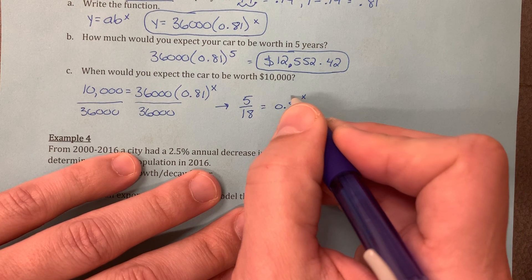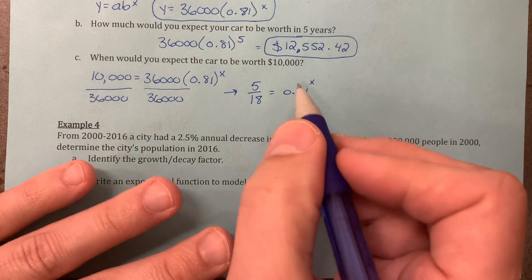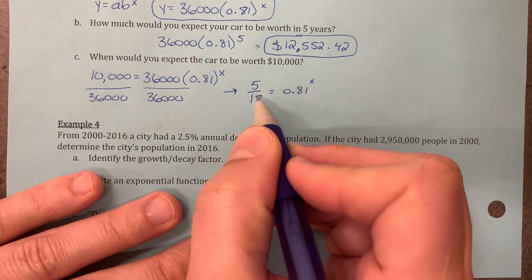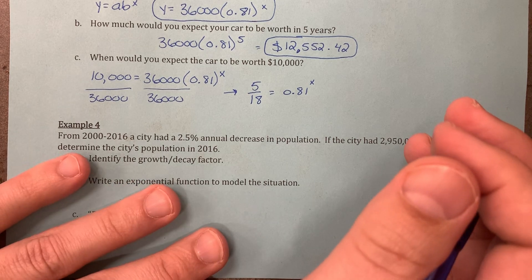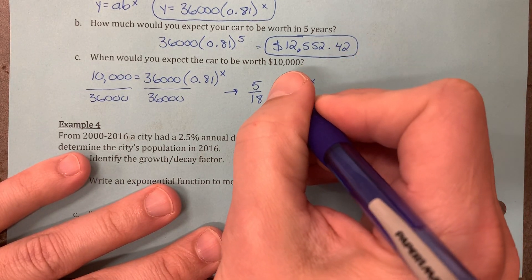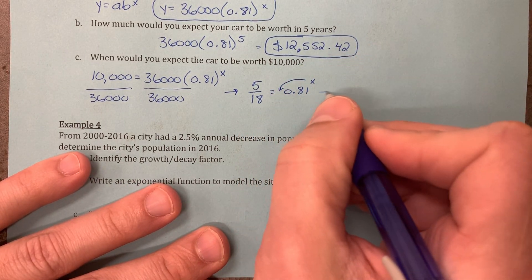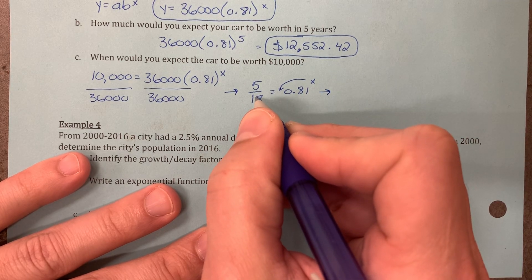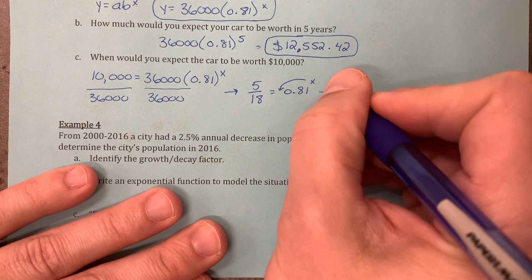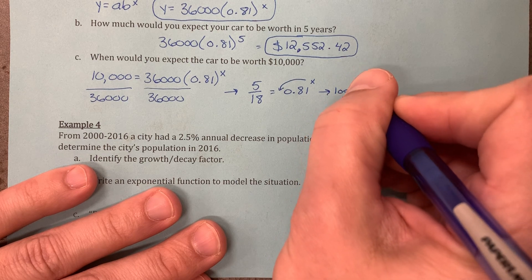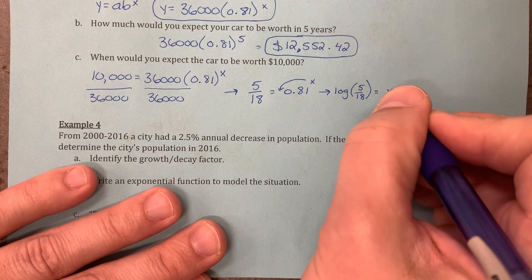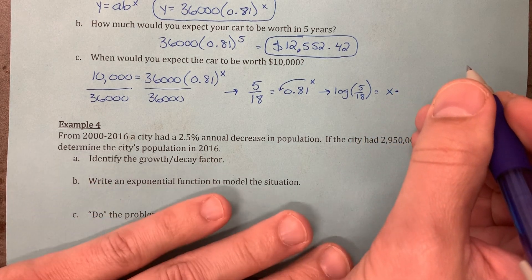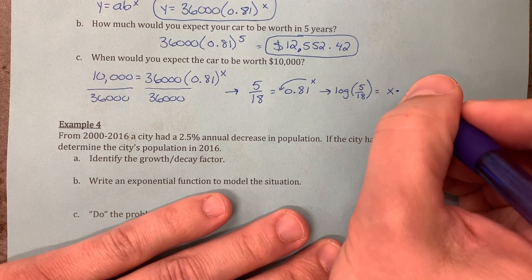What you want to do is move that x to the front of this. Move that x to the front, and then we're going to change each one of these numbers to a log. So move this to the front. And then this is no longer 5 18ths. It is now going to be log of 5 18ths equals the x that we move to the front times log of 0.81.